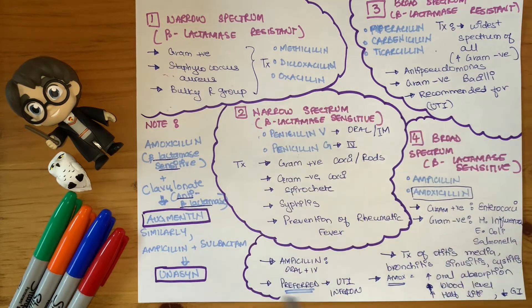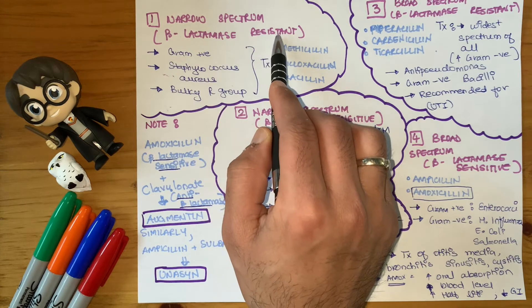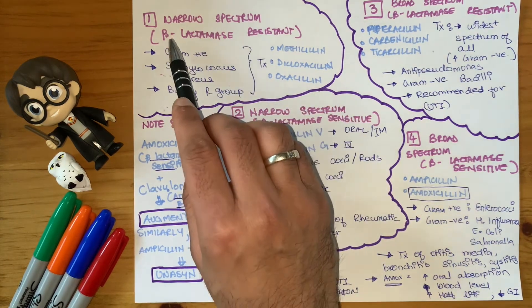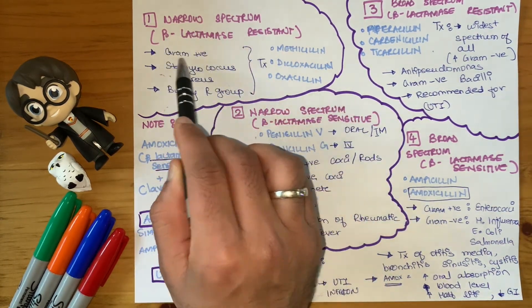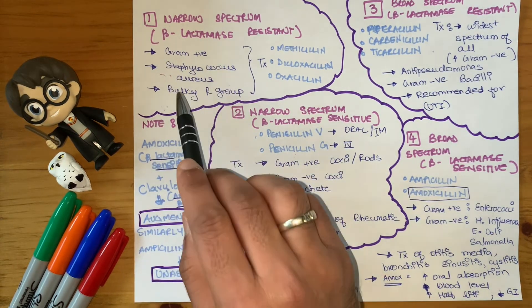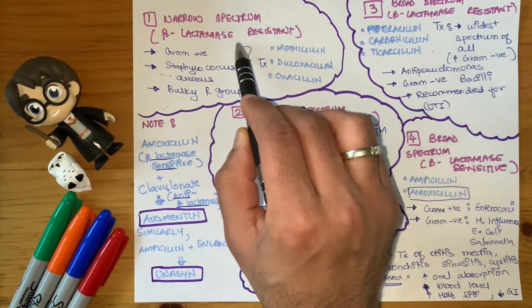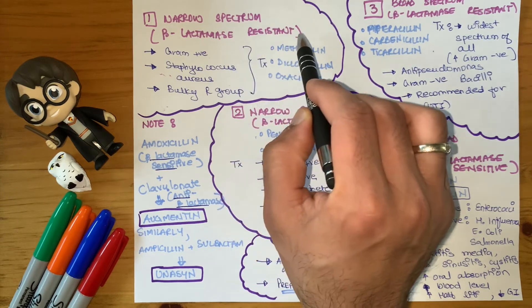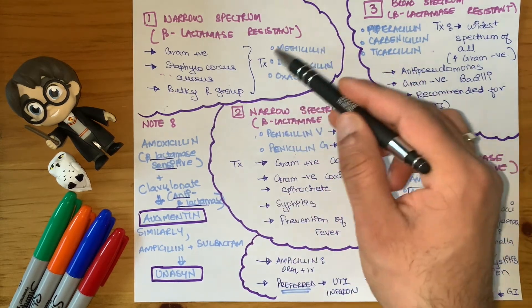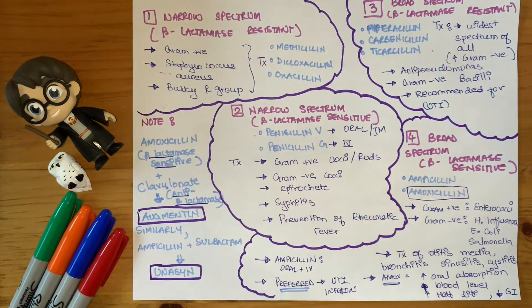Looking at the subgroups in more detail: the narrow spectrum beta-lactamase resistant drugs focus on gram positives, specifically Staphylococcus aureus. They have a bulky R group, which is what makes them beta-lactamase resistant — protecting against enzymatic deterioration. These include methicillin, dicloxacillin, and oxacillin. They are very strong but narrow spectrum, targeting only Staphylococcus aureus and gram positives.